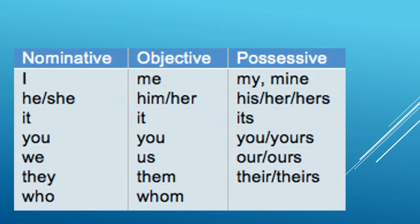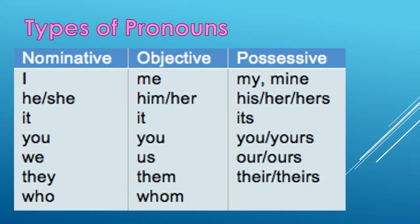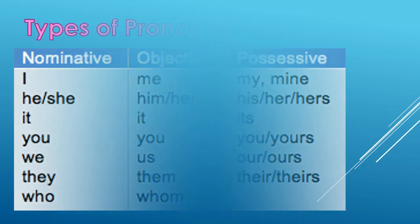There are three types of pronouns: nominative, objective, and possessive. They each play their part in a sentence. You can have more than one noun in a sentence.